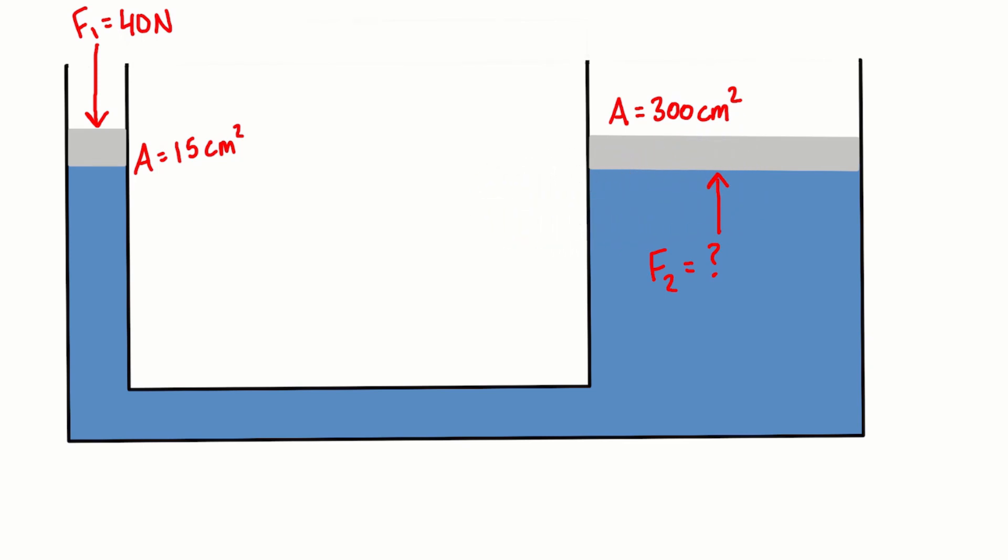So for most hydraulic lift problems each piston will be at the same height, otherwise we'd have to calculate a little bit of difference for the difference in pressure in the height of the water column. But in general our applied pressure P is going to be equal to our force over area. So force 1 over area 1 which is equal to force 2 over area 2.